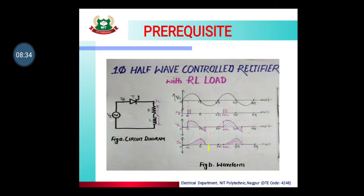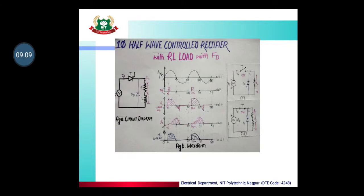Until the current becomes zero, the SCR remains on and negative voltage appears across the load. Once the current reaches zero, the SCR turns off and the load current also becomes zero — then the cycle repeats. The drawback here is that negative voltage appears across the load, which causes the average output voltage to decrease. To overcome this situation, we use a freewheeling diode.